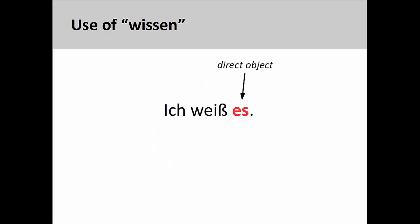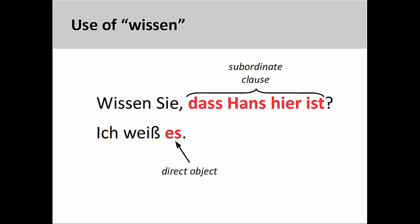Finally, Wissen can also take a direct object — here, a third-person singular neuter personal pronoun: 'Ich weiß es' — I know it. However, this can only be done if the fact to which this pronoun refers has already been established. For example, the fact that Hans is present, expressed in the subordinate clause in the first sentence, is referenced by the personal pronoun in the second sentence.